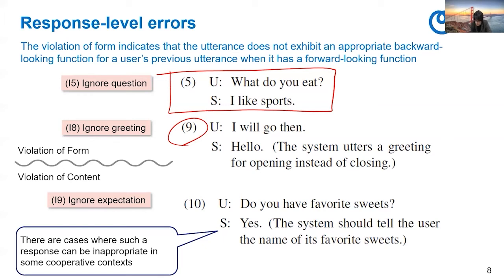As for the violation of content at the response level, we have I9 ignored expectation. The example looks like this: the user says 'Do you have favorite sweets?' and the system says 'Yes.' But here, the system should tell the user the name of its favorite sweets.